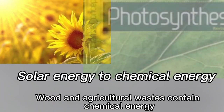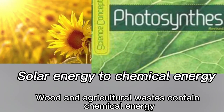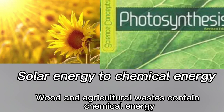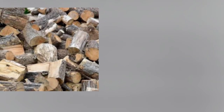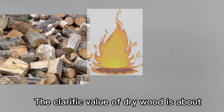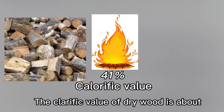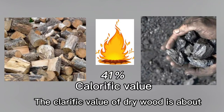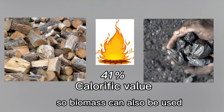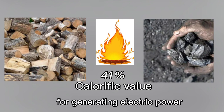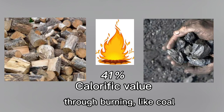Wood and agricultural waste contain chemical energy coming from photosynthesis. The calorific value of dry wood is about 41% of that of coal, so biomass can also be used for generating electrical power through a boiler, like coal.